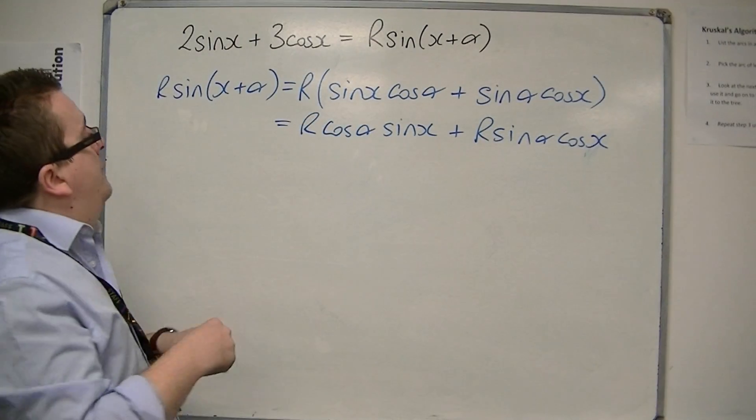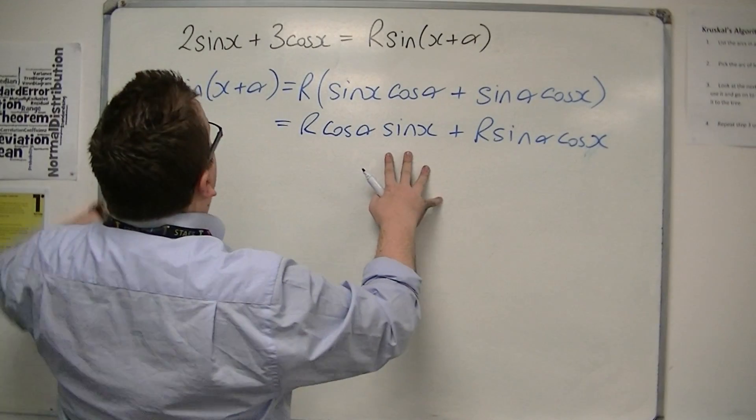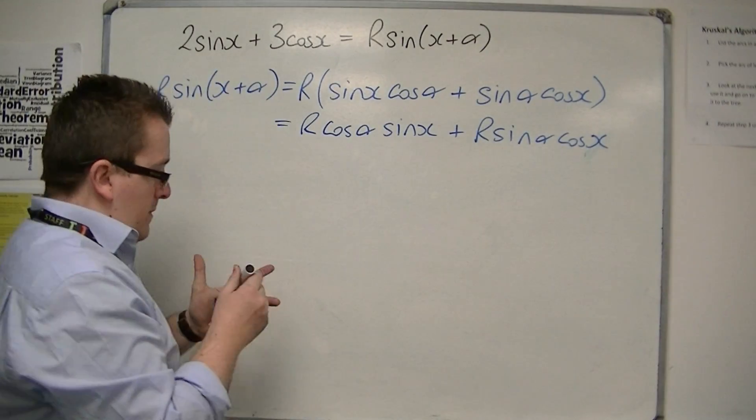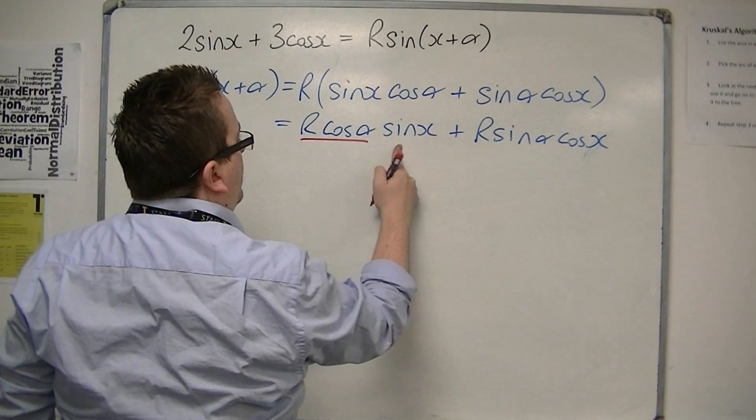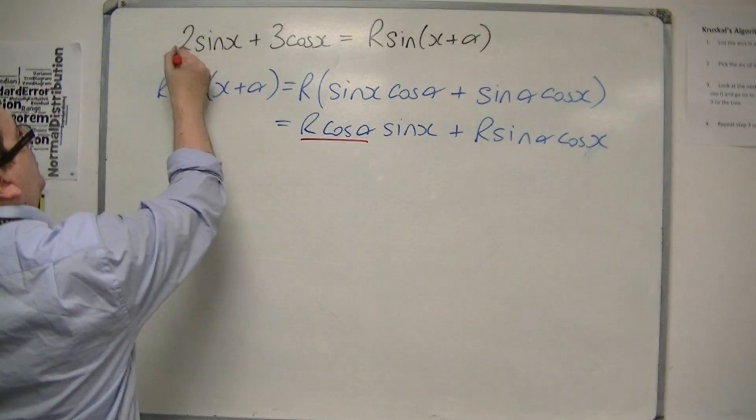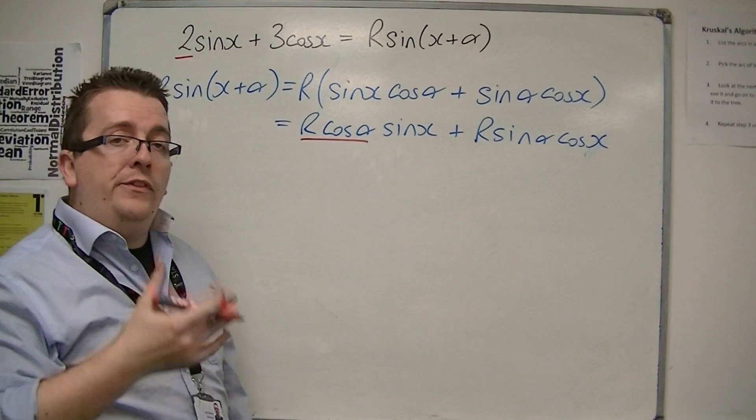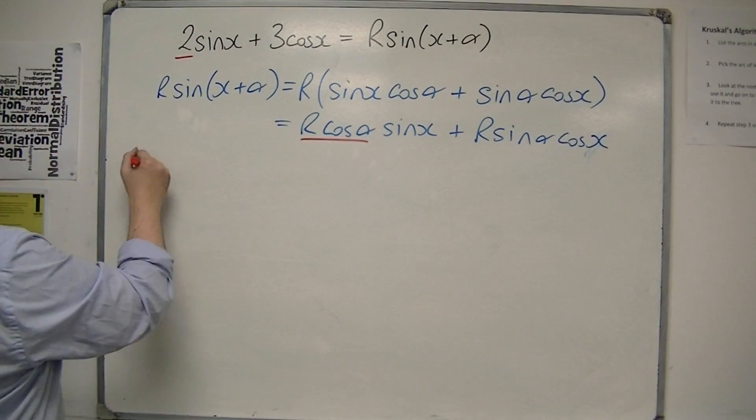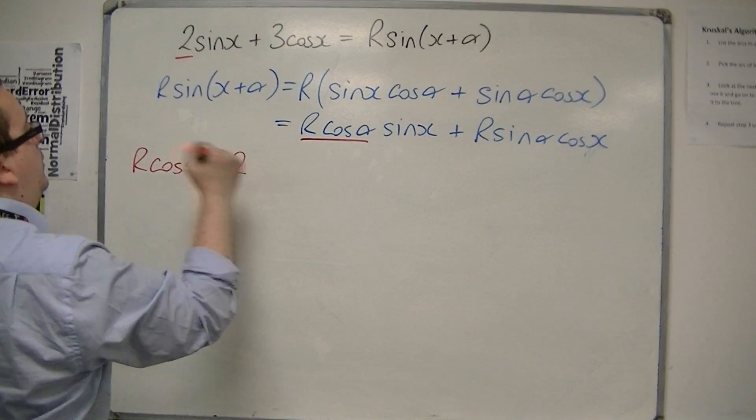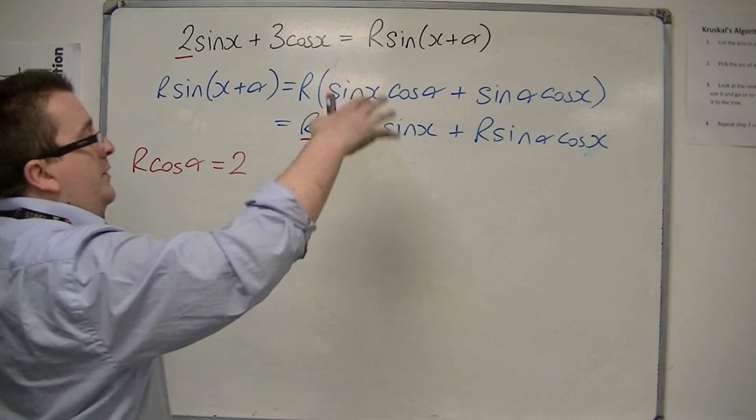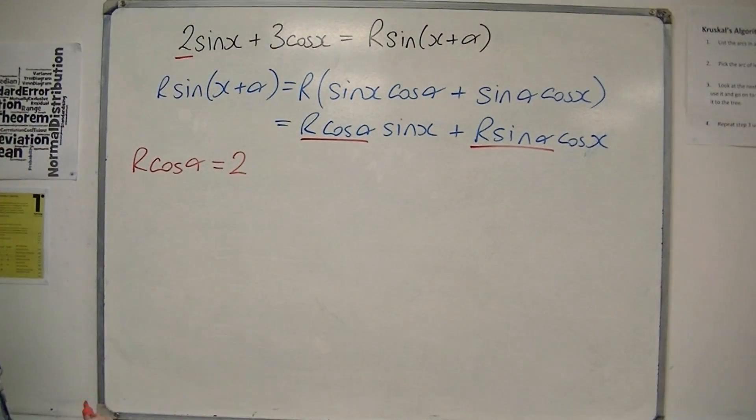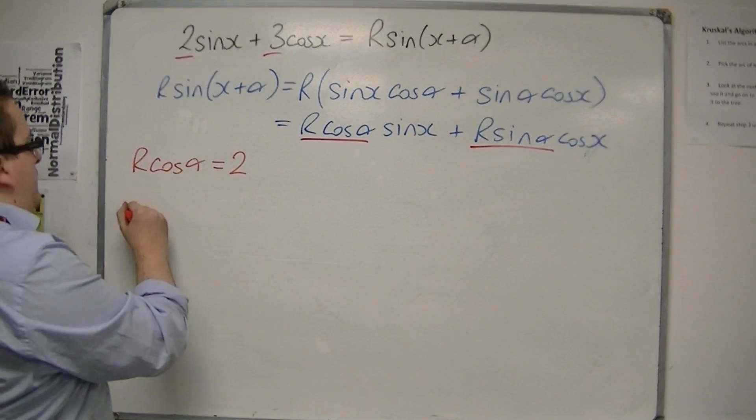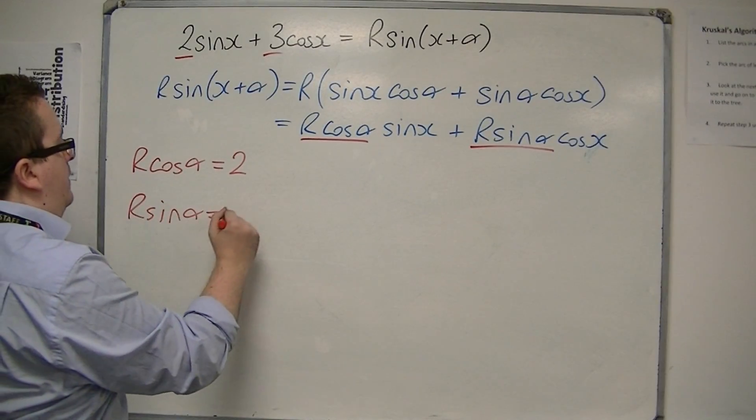Now, what we have is that if this and this must be the same, then the r cos α in front of the sin x must be the same as the number that is in front of the sin x there. So r cos α must be 2. And the number in front of the cos x, this r sin α, must be the same as the number in front of the cos x there, the 3. So r sin α is 3.